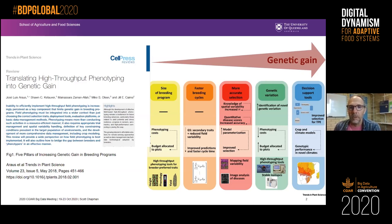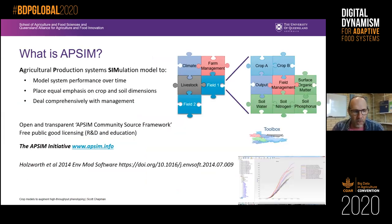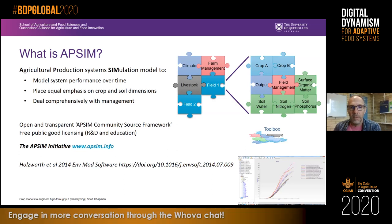We want to map the field variability, parameterize models, and understand how to predict performance in different environments — including prediction of performance in different production environments outside where you've done the testing. What I'm focusing on is mainly how do we improve the phenotyping steps. One of the tools we use is APSIM, a well-established cropping systems model developed for 30 years, started in Australia.